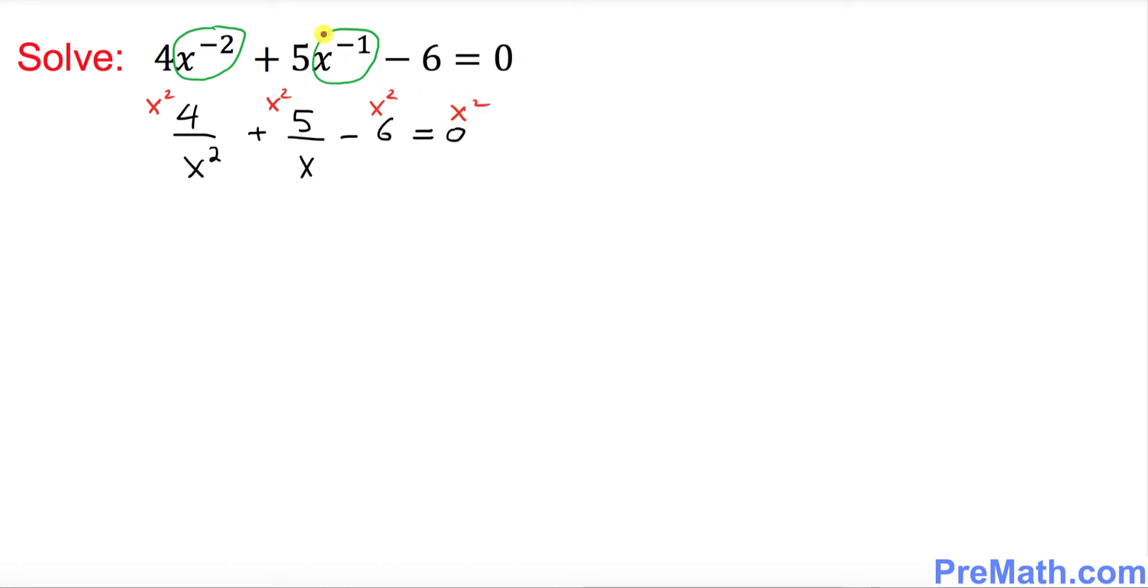x squared is the least common denominator. So now what happens is x squared and x squared cancel out, we're left with 4 plus, and 1x cancels out, we're just left with 1x only, so 5 times x minus 6 times x squared, and on the right hand side 0 times x squared is 0.